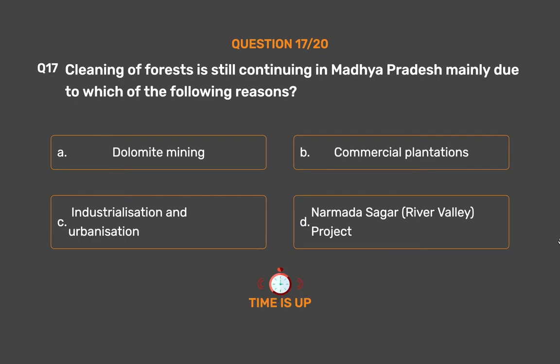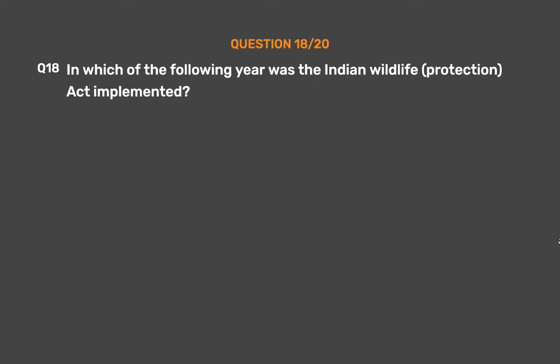The correct answer is Option D: Narmada Sagar River Valley Project.